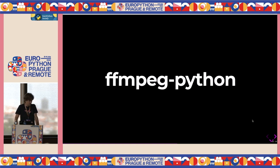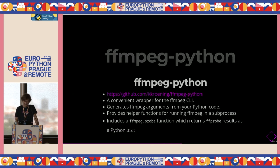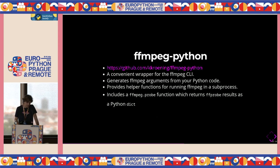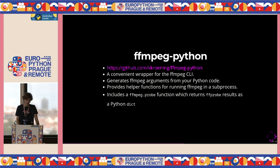Let's move to FFmpeg Python, because writing the filter complex argument wasn't easy or straightforward if you've never used FFmpeg before. And if you add conditional filtering in a project, it gets very unpleasant to maintain. FFmpeg Python is a nice, small Python project available on GitHub — a convenient wrapper for the FFmpeg CLI focused on filter graphs. It generates FFmpeg arguments from your Python code, provides helper functions for running FFmpeg in a subprocess, and includes an FFmpeg probe function that returns FFprobe results as a Python dict, making it much easier to parse.